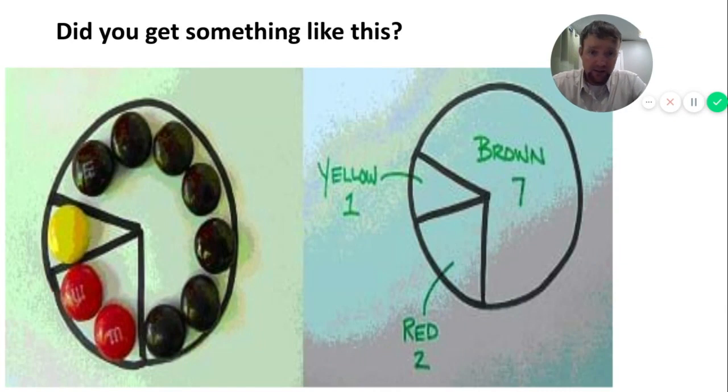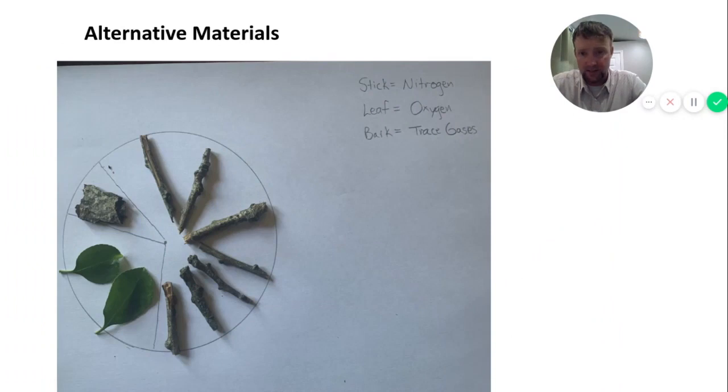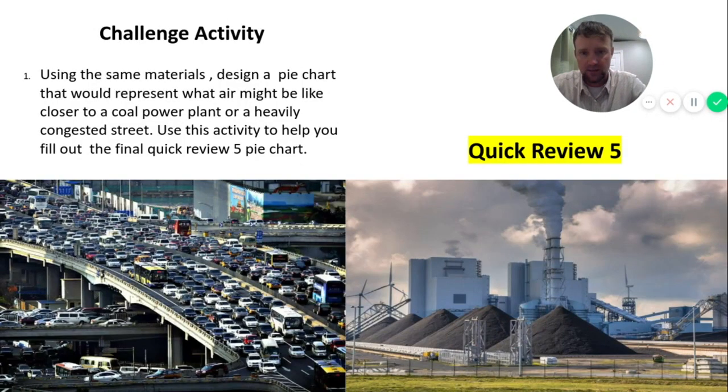So did you get something like this? Here's my little pie chart. You can see on the left there, that's the finished product. I've got my seven brown M&Ms, my two red to represent oxygen and the one yellow to represent the trace gases. Mr. Davis is old school. Like I said, I don't have any candy at the hizzle. So just use some sticks, a little bit of bark and some leaves. My sticks represent the nitrogen as the leaves or the oxygen and the bark just represents some of the trace gases. So this will be the last little activity here.